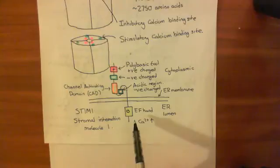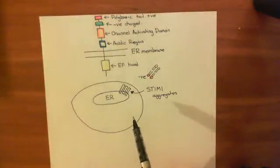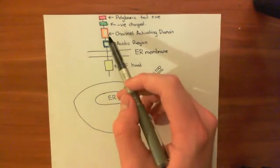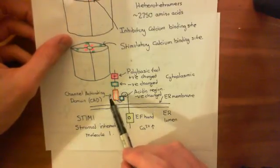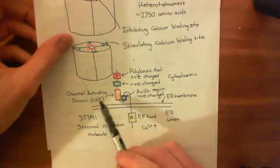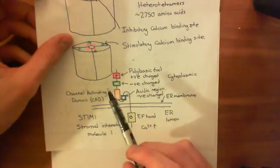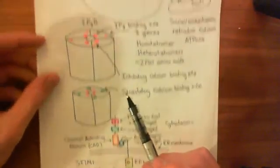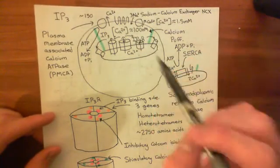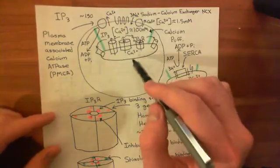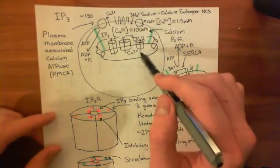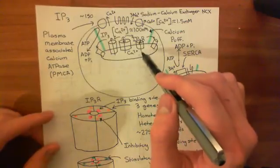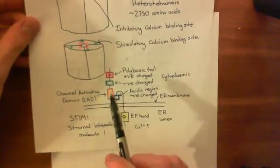When calcium levels go down in the ER, the conformation of STIM1 changes and it takes on a new conformation. The channel activating domain stops being bound to the acidic region, meaning the channel activating domain is now free to interact with a channel that allows calcium to come in from the extracellular fluid into the cytoplasm. The SERCA pump then moves it back into the endoplasmic reticulum to replace the lost calcium. That movement of calcium back into the ER from the extracellular fluid is called capacitative calcium entry or store-operated calcium entry.